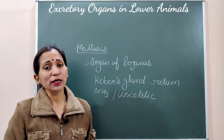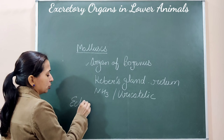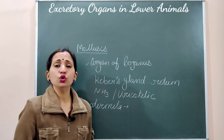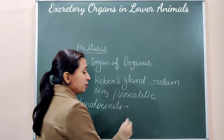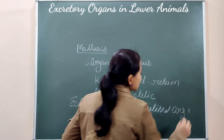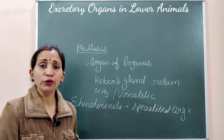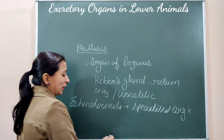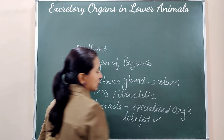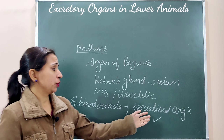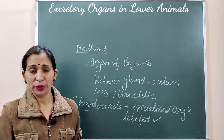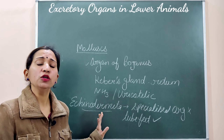The next phylum is Echinodermata. Echinoderms do not have any specialized excretory organ. They excrete their nitrogenous waste through the thin walls of their tube feet. These tube feet help with excretion. No other specialized organ is present for excretion in this phylum. Examples of echinoderms include starfish, sea urchin, sea cucumber, etc.